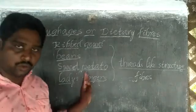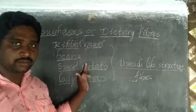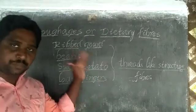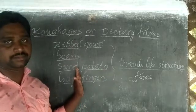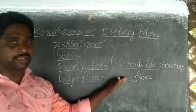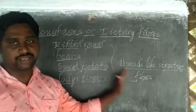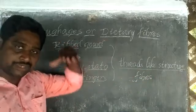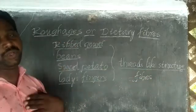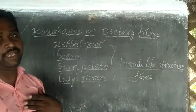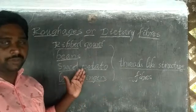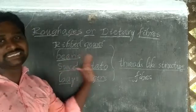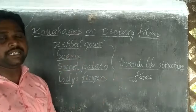This fiber is also one of the food components. We know carbohydrates, proteins, minerals, vitamins, and fats are the main food components. Fibers are also one of the food components that our human bodies need.